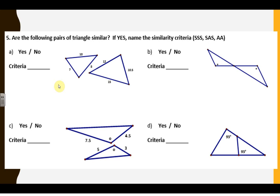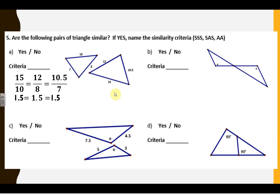Are these triangles similar? Yes or no? When you're given numbers, think about sides. Set up all the proportions — the biggest numbers go together, the middle numbers go together, the small numbers go together. If they all equal the same ratio, here 1.5, then yes, it's similar by side-side-side. You have to show that work. Over here I see the same angles and vertical angles, so yes — angle-angle. No side lengths given at all.